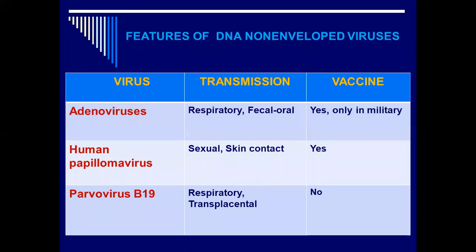From adenovirus we can interpret two things: the virus is a DNA virus with no envelope — a non-enveloped DNA virus. Secondly, 'adeno' refers to the fact that the virus is localized and causes infection in the adenoid tissue of the body.